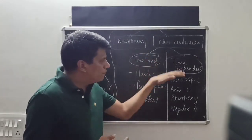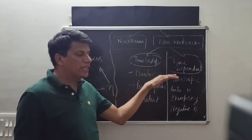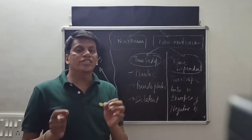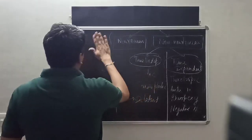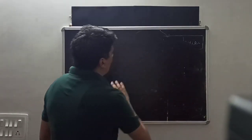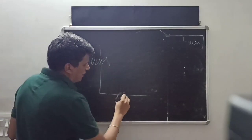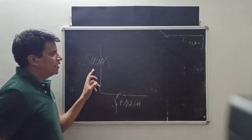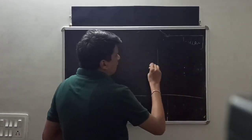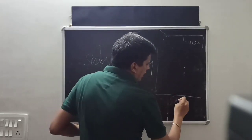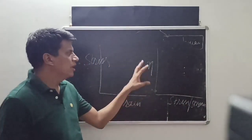To understand each of these flow behaviors, we must first know what a rheogram and a viscogram are. A rheogram is the relationship between stress and strain — the stress-strain graph is called a rheogram.